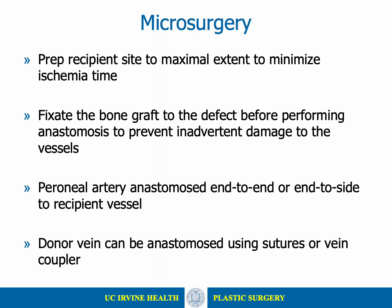Attention is then turned to the recipient site, which is prepared to the maximum extent before pedicle division to minimize ischemia time. The bone flap is fixated to the defect before performing the anastomosis to prevent inadvertent damage to the vessels. The microscope is then brought in, and the peroneal artery is anastomosed end-to-end or end-to-side to a recipient vessel. The donor vena comitantes can be anastomosed with sutures or a vein coupler.